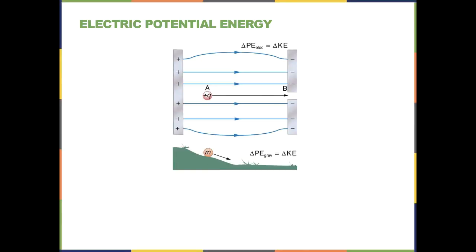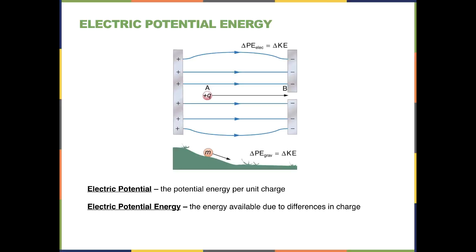Today we're going to move on in our study of electricity and electrostatic charge and talk about electrical potential. We'll start with this diagram and use it to define electrical potential. Electrical potential is the potential energy that a particle has per unit charge of that particle.